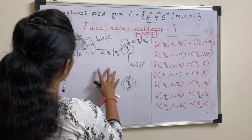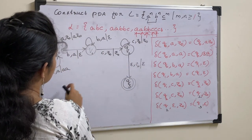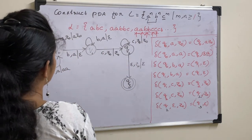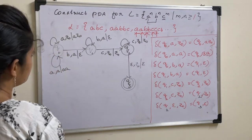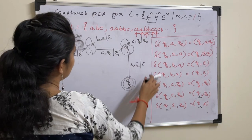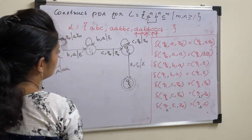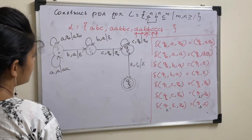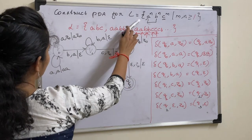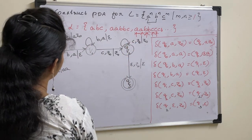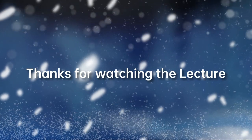This is how we draw the transition diagram in graphical notation for the given transition functions and the given language. Thank you.